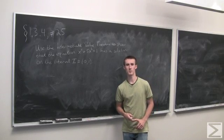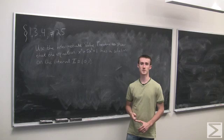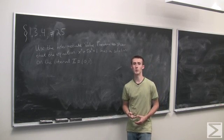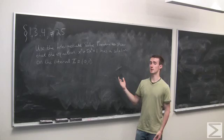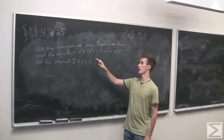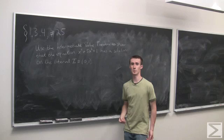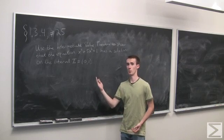Problem number 25 of section 1.3.4 asks us to use the intermediate value theorem to show the existence of a solution to the equation x^6 + 5x^3 = 1 on the interval 0 to 1.